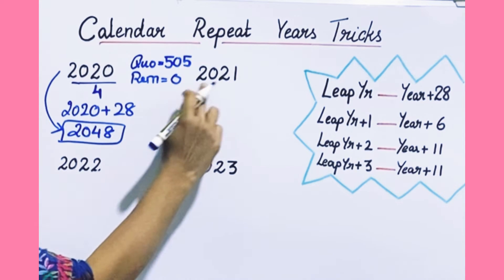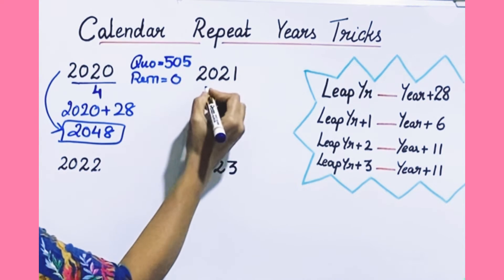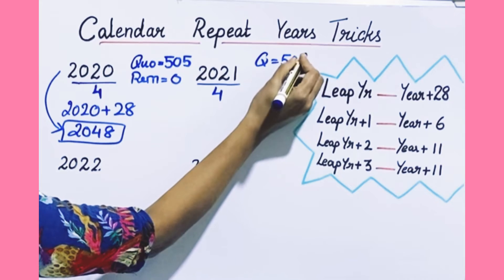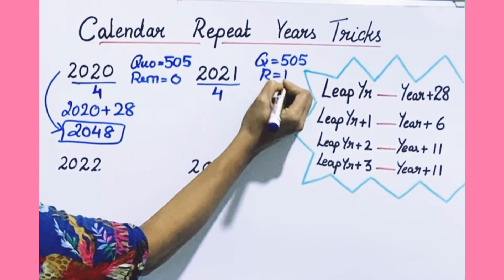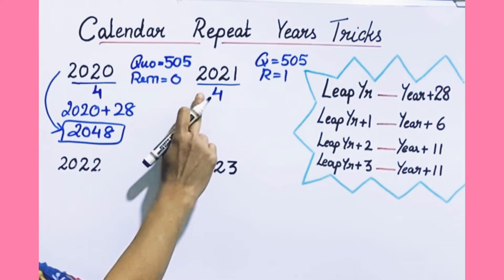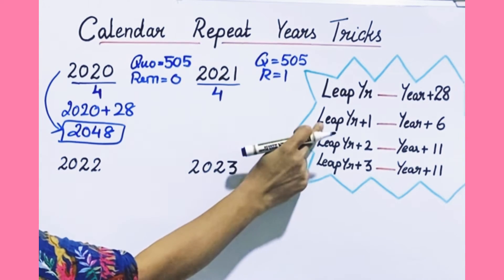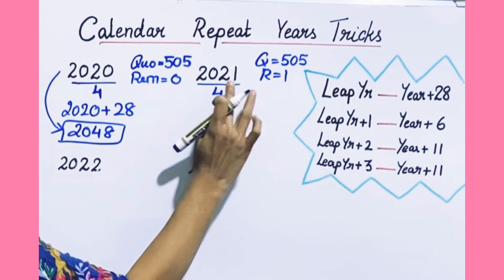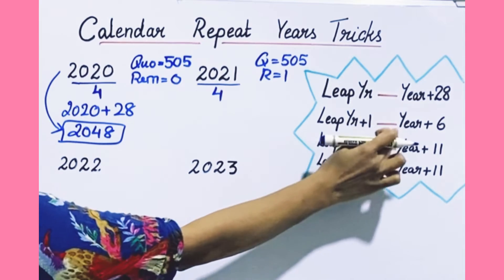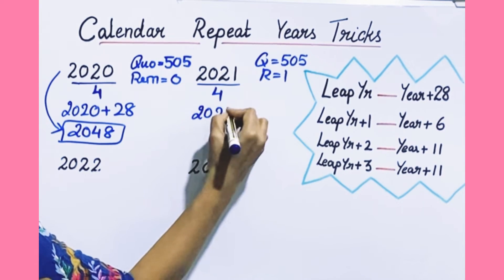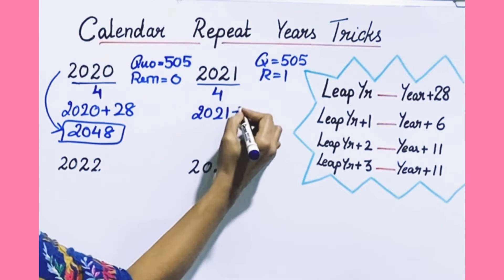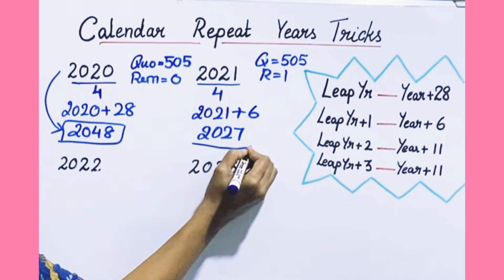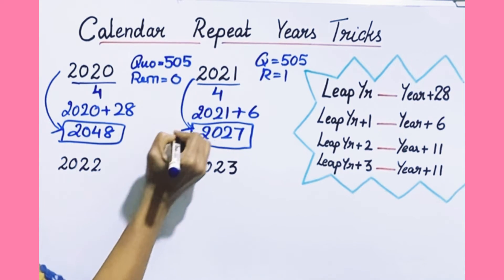Now for 2021 — when does it repeat? Take this and divide it by 4. The quotient will be 505 and the remainder is 1, so it's not a leap year. Remainder is 1, meaning this is a leap year plus 1. If it is leap year plus 1, then take the year and add 6. So 2021 repeats in 2027.